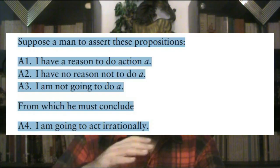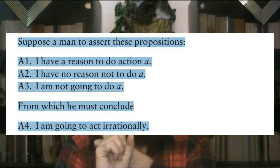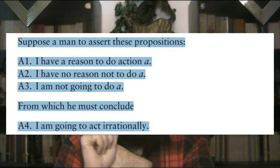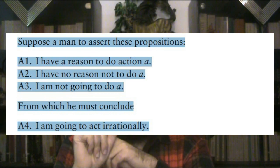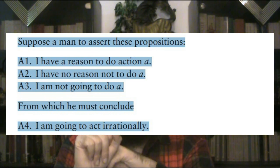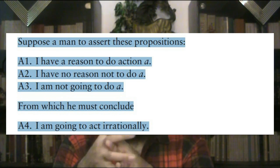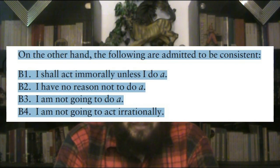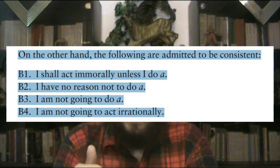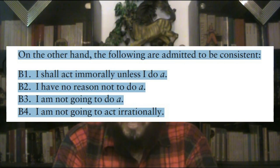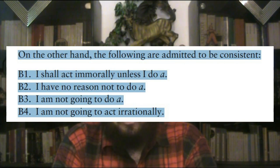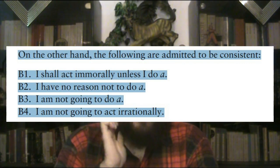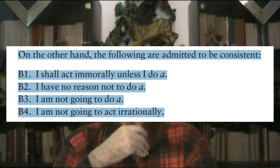Let's see how Foote frames the problem analytically. She writes: suppose a man to assert these propositions. A1: I have a reason to do action A. A2: I have no reason not to do action A. A3: I am not going to do A. From which he must conclude A4: I am going to act irrationally. On the other hand, the following are admitted to be consistent. B1: I shall act immorally unless I do A. B2: I have no reason not to do A. B3: I am not going to do A. B4: I am not going to act irrationally.